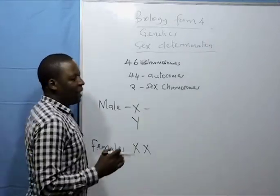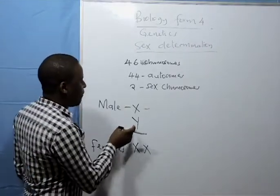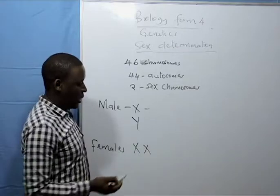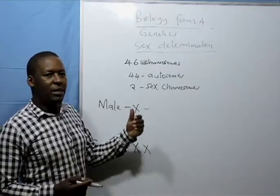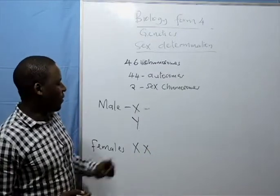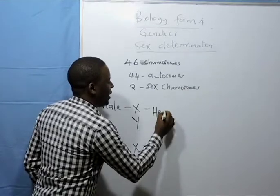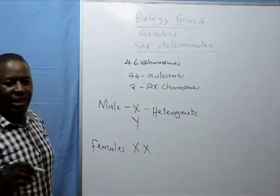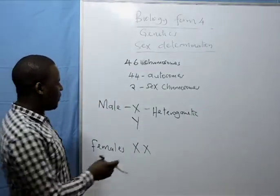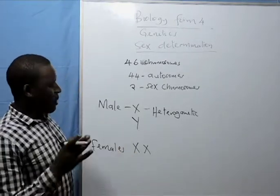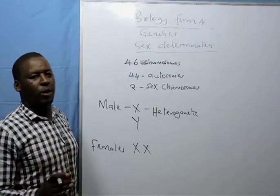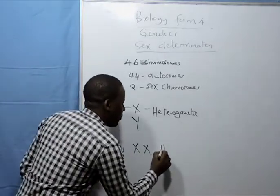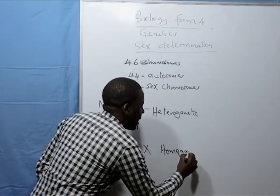Therefore, when a male forms gametes, some gametes have X chromosome, other gametes have Y chromosome. So a male can form two different gametes, one is X, one is Y. Therefore, males are known as heterogametic.